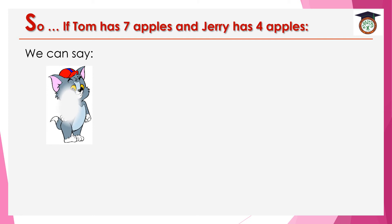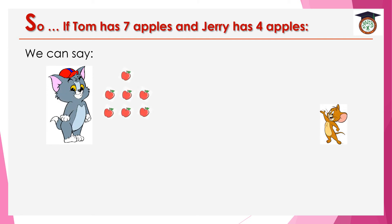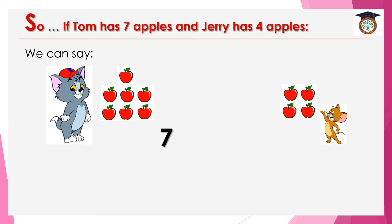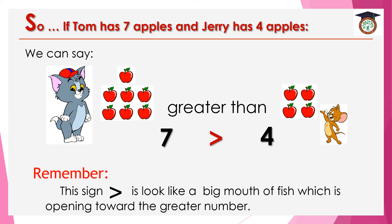How many apples does Tom have? Let's count — they are 7 apples. And Jerry has 4 apples. Seven is greater than four. Remember, this sign looks like a big mouth of a fish which opens towards the greater number.